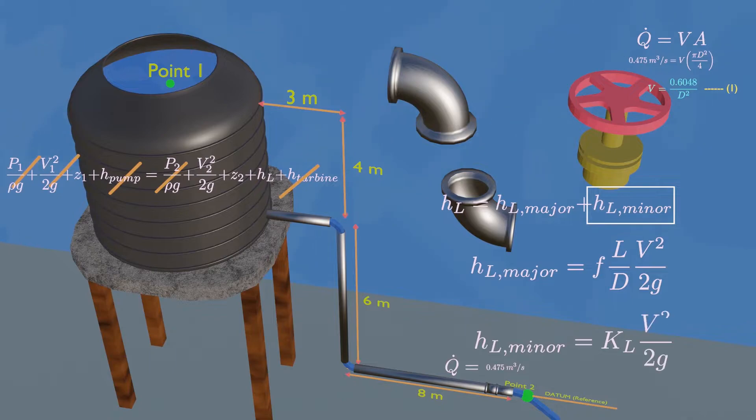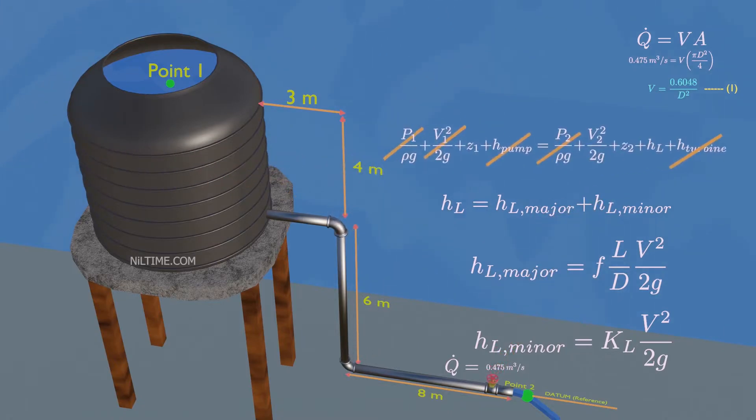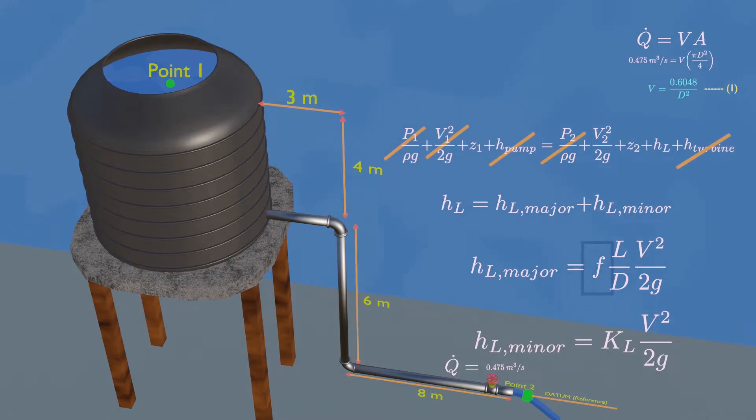The formula for calculating minor head losses: Look how the major head loss and minor head loss are related with the coefficient. Major loss related with Darcy friction factor, whereas minor loss is related with loss coefficient.